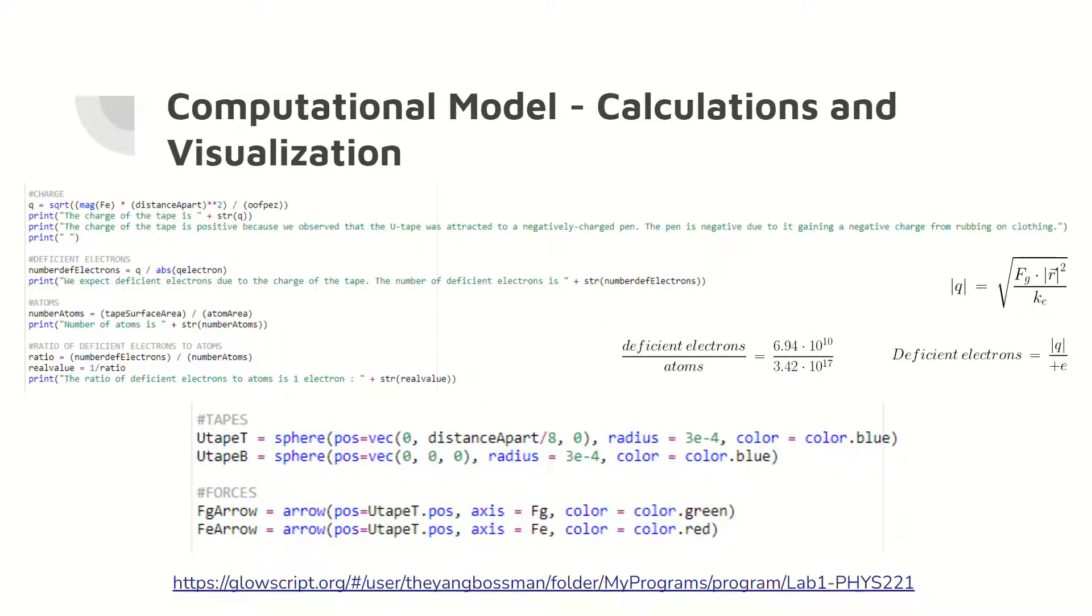This slide shows the calculation section of the code and the visualization section of the code. This includes the calculation for charges, deficient electrons, number of atoms, and the deficient electron-to-atom ratio, with the relevant equations converted to code on the right side.